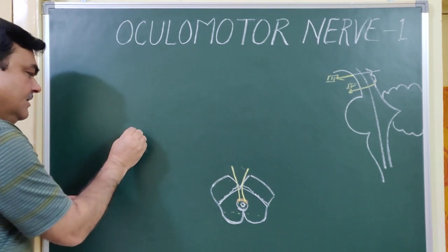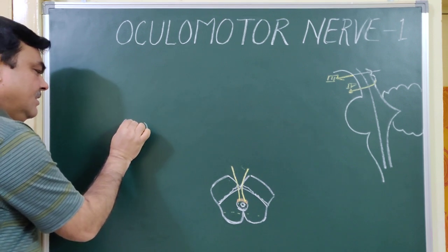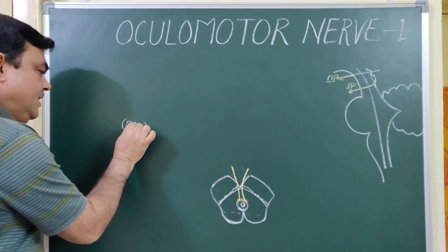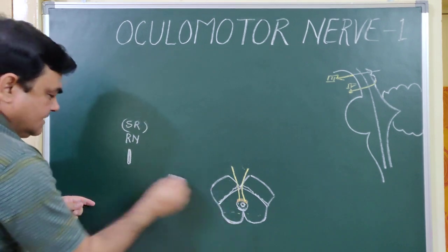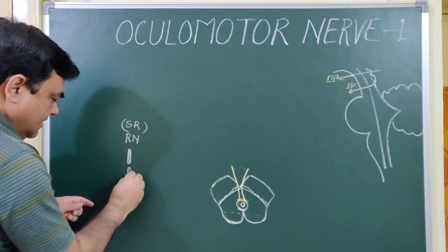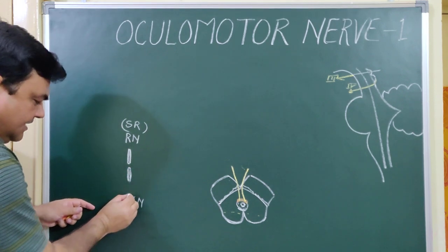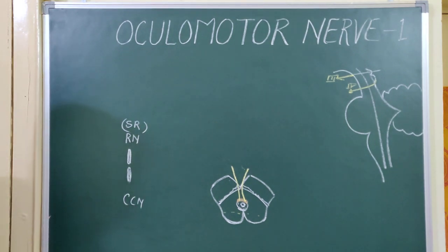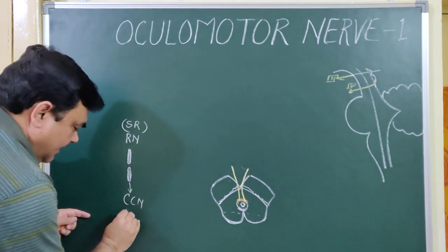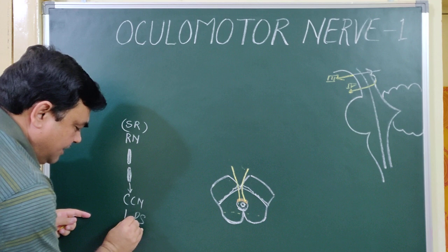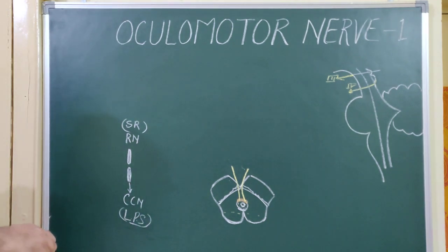The oculomotor nuclei is made up of several small nuclei. The Rife nucleus contains nerve fibers for the superior rectus muscle. There is also the CCN, that is the caudal central nucleus, which is for the levator palpebrae superioris muscle.